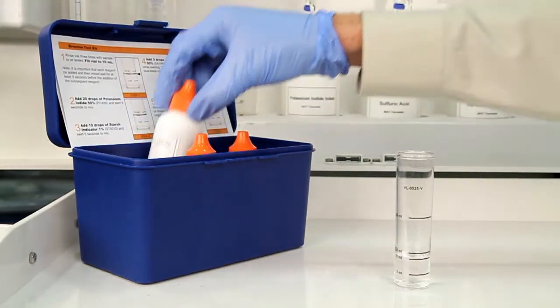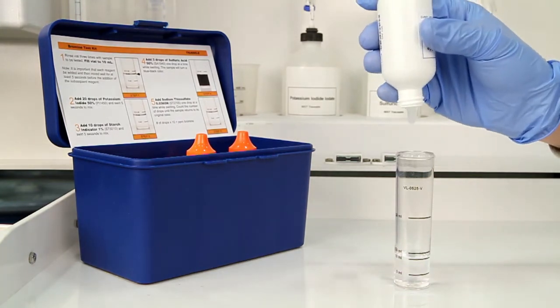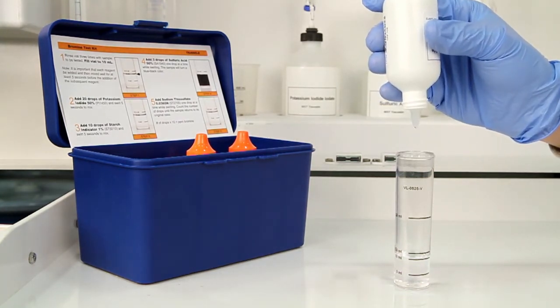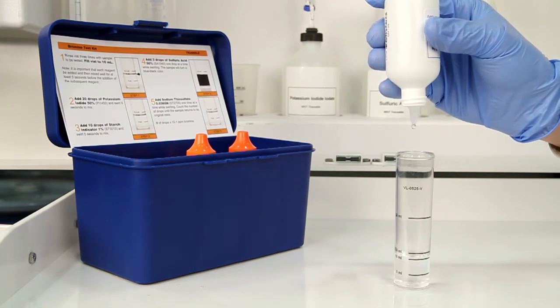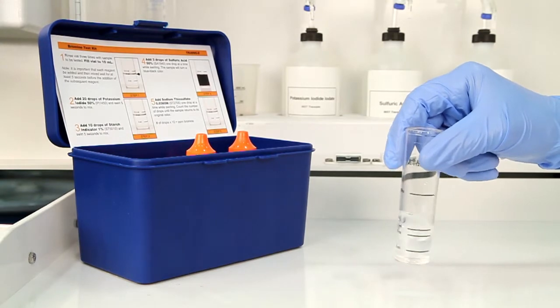Once you've collected an accurate sample, the next step is to add 10 drops of potassium iodide 50%. The bottle contains a dropper tip, so it's important to hold the bottle vertically to get a consistent drop size. After the addition of each reagent, swirl the vial for 5 seconds to make sure the reagents are properly mixed.